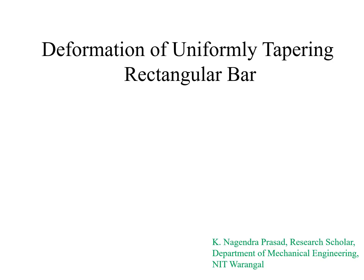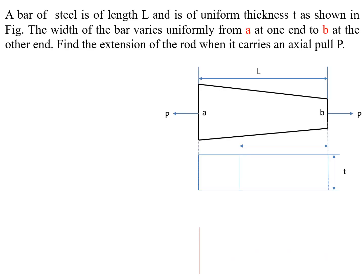Hello everyone. In this lecture I am going to discuss how to derive the deformation of a uniformly tapering rectangular bar. The bar of steel is of length L and having uniform thickness t as shown in the figure. The width of the bar is varying from small a to small b, where a is the width at the bigger end and b is the width at the smaller end. We have to find the extension of the rod when it carries an axial pull of capital P.